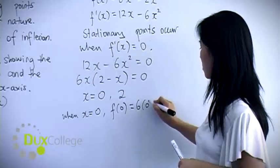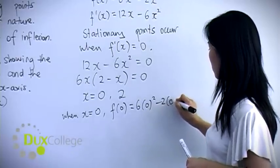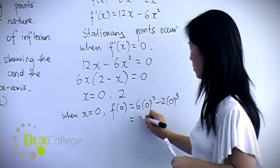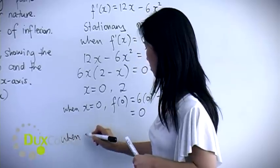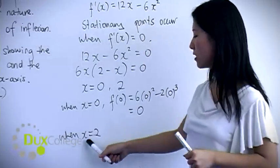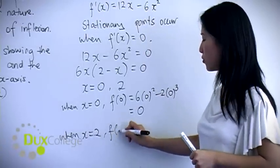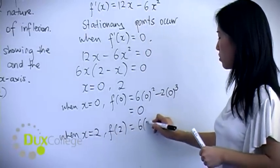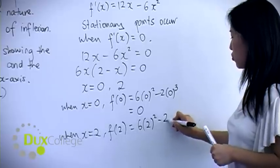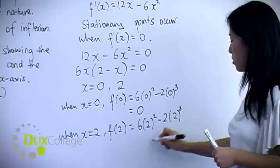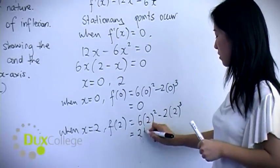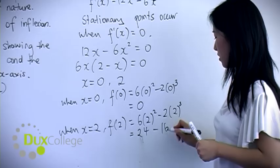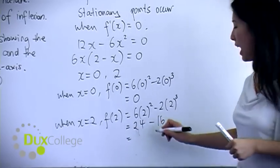And when x = 2, we have f(2) = 6(2²) - 2(2³). So you can see that that would be 24 - 16, which is 8.